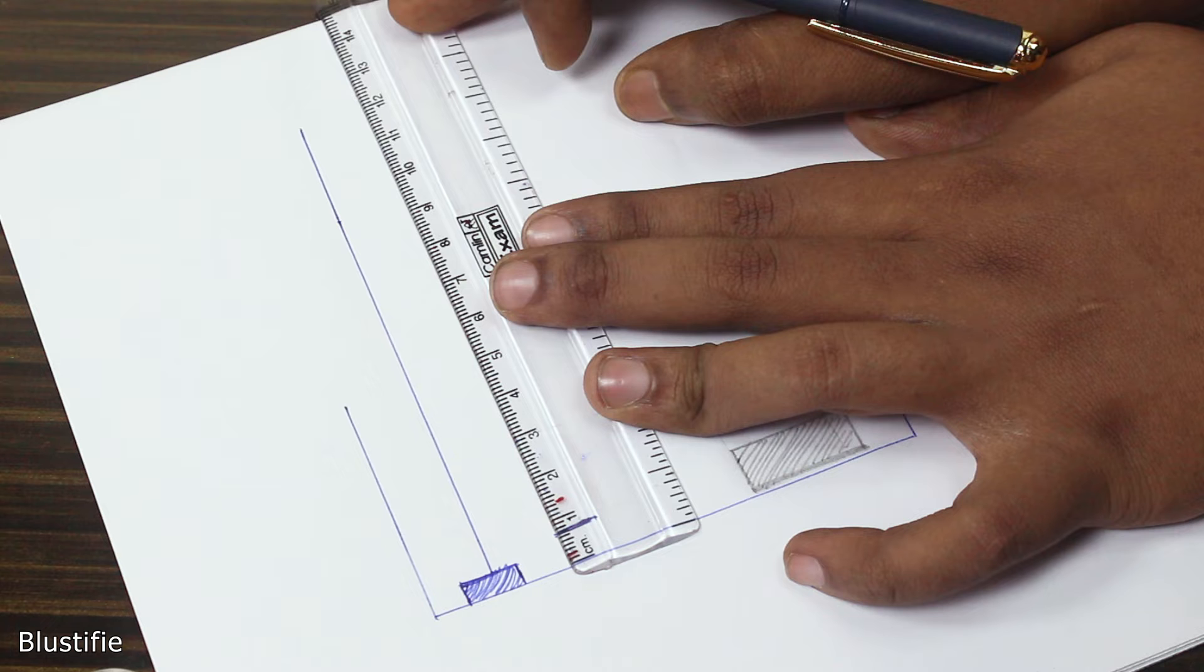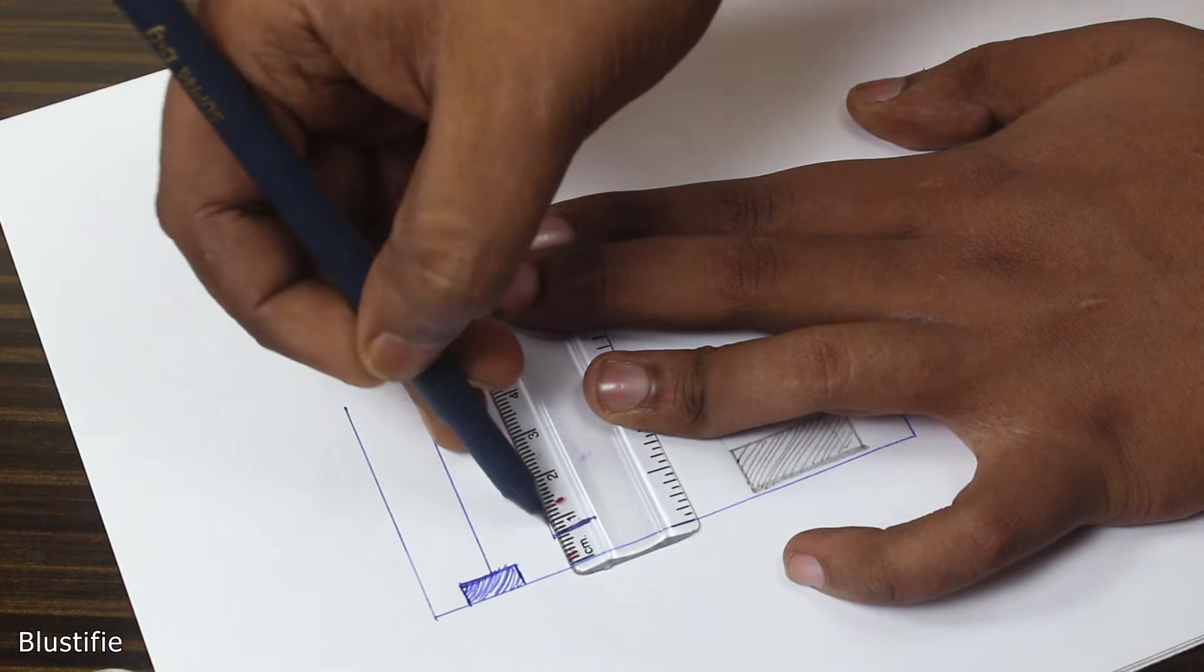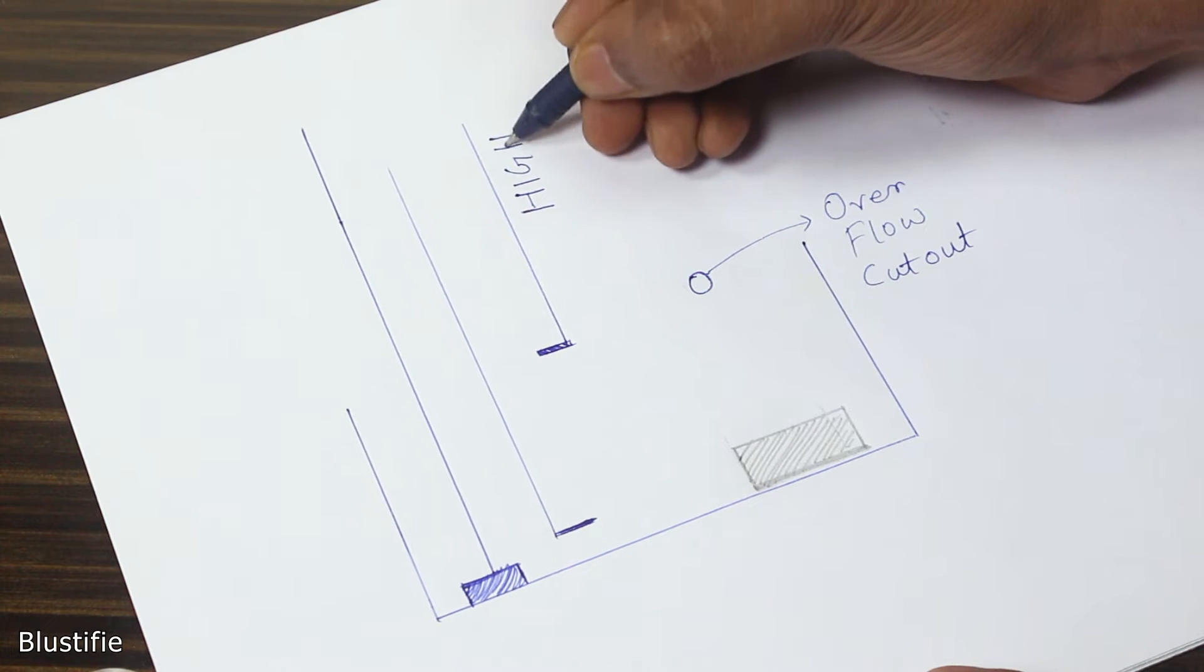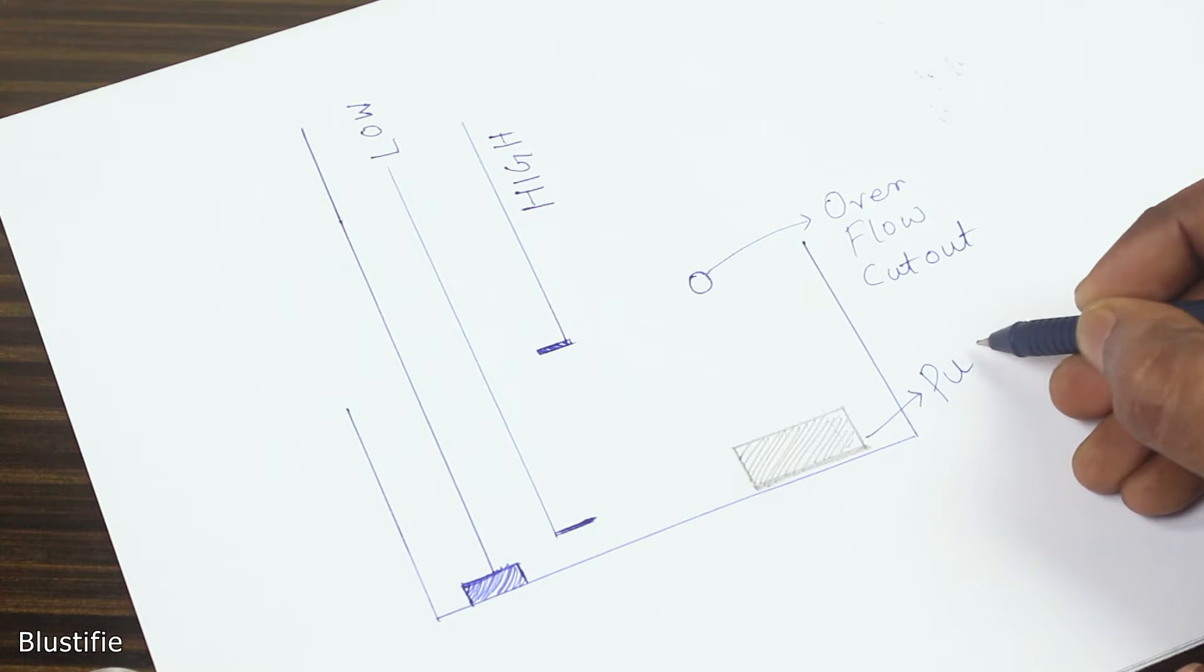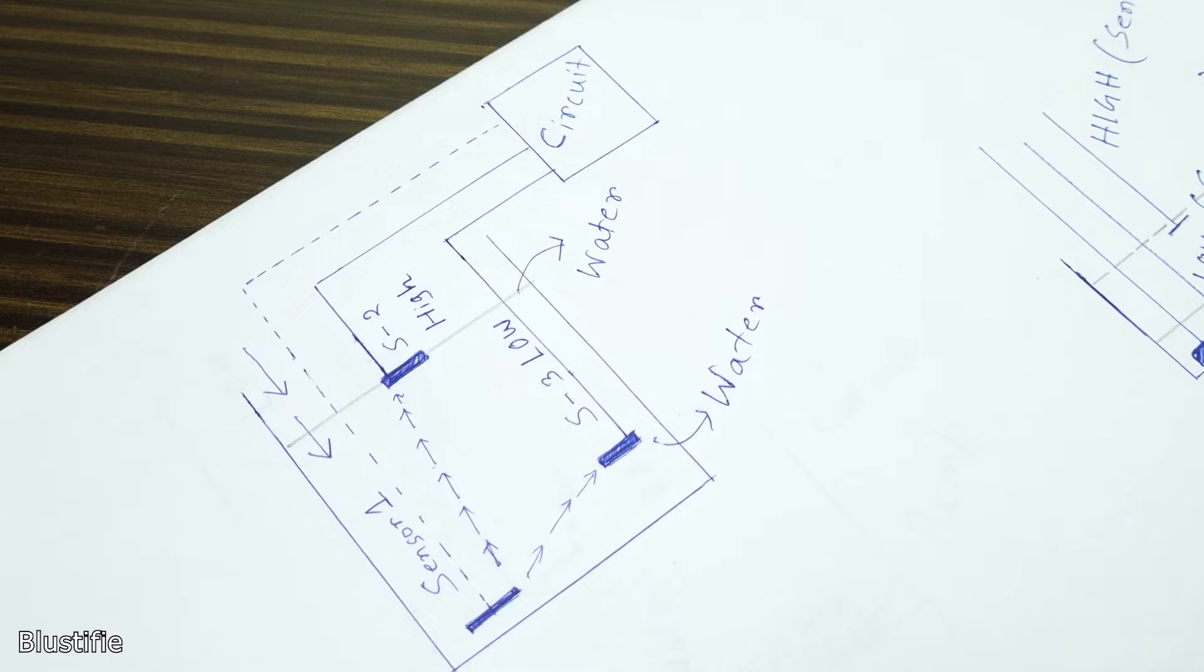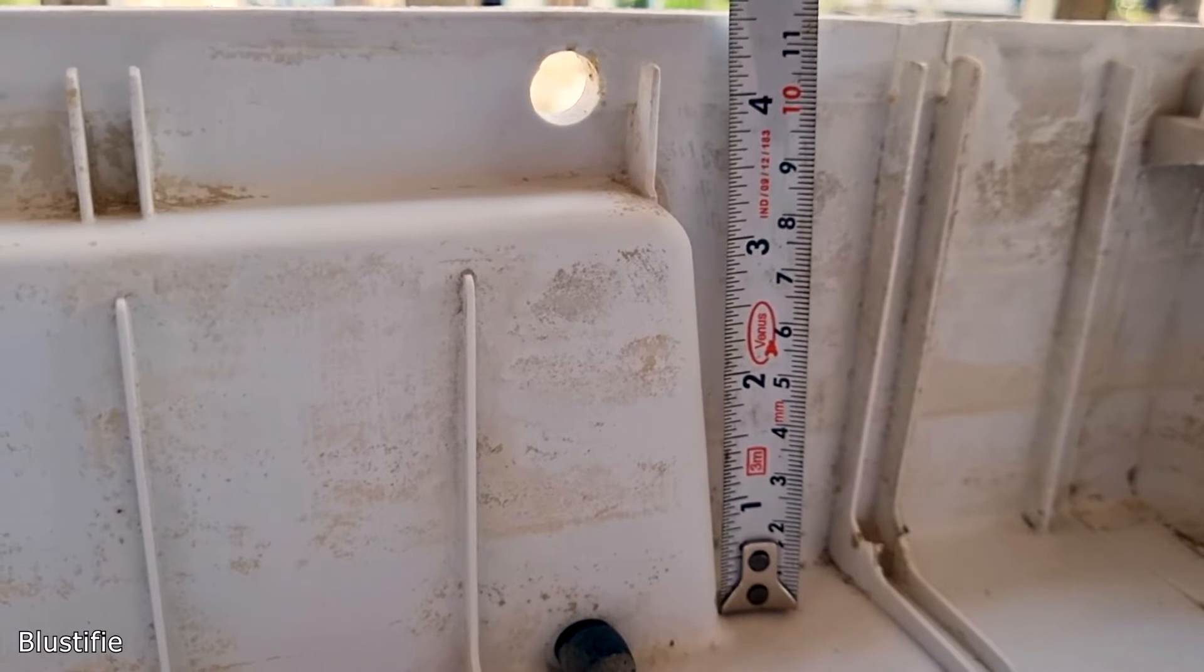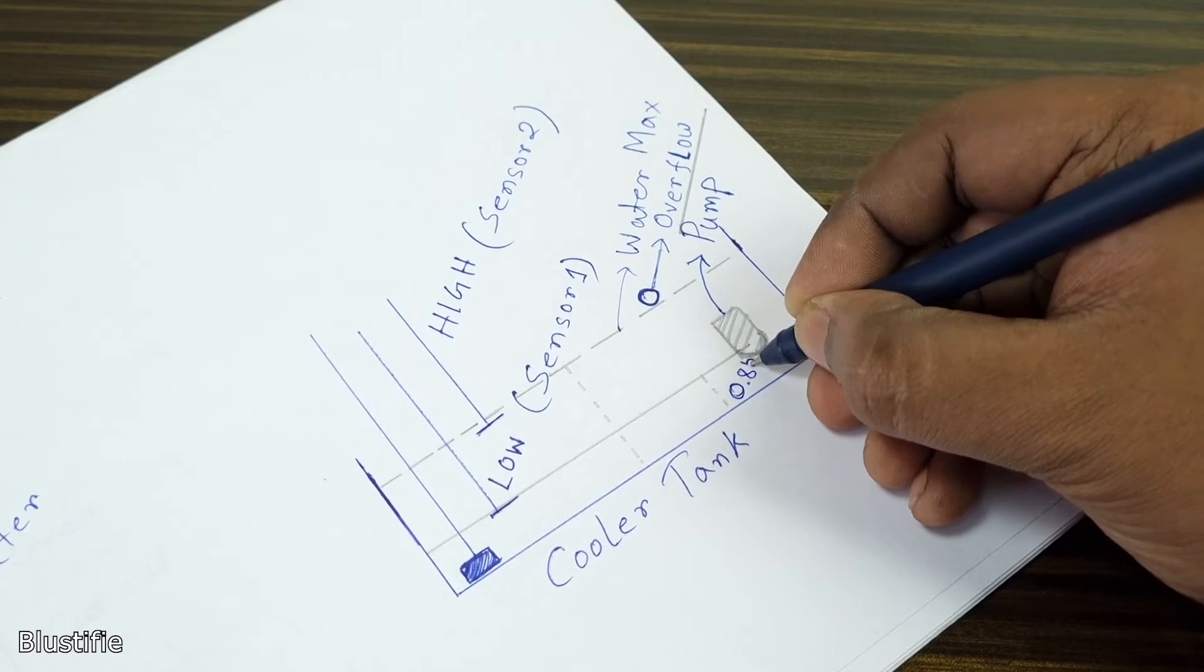The low water level indication sensor should be placed a bit above the pump section area. And the third one, which detects the level high, could be placed just below the overflow cutout of the cooler body. For now it's enough for the theory. I have measured all the distances carefully, and this is the result I finally get.